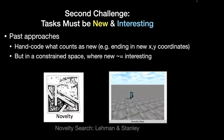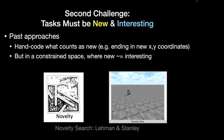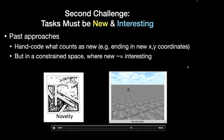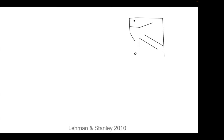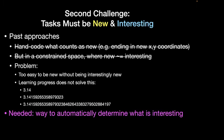People have tried to hand-code what counts as new, such as ending in a new XY coordinate, as in novelty search — but they've done this in a really constrained space where anything new is already interesting. Work by Lehman and Stanley shows that if you just remove the walls on a maze, XY is no longer interesting because there's an infinite space of possible places you could go. So learnability is not enough.